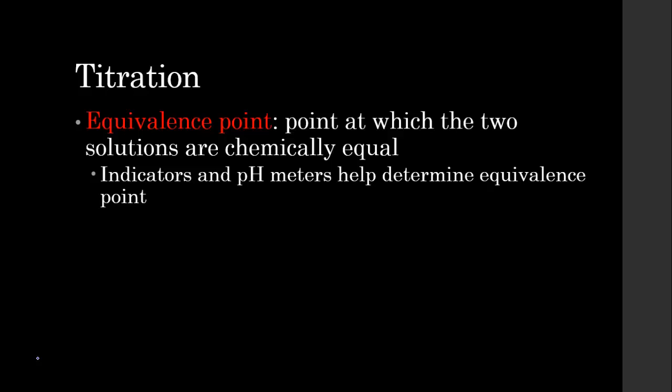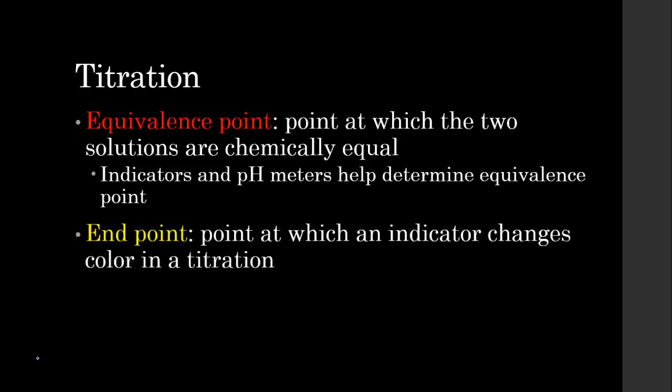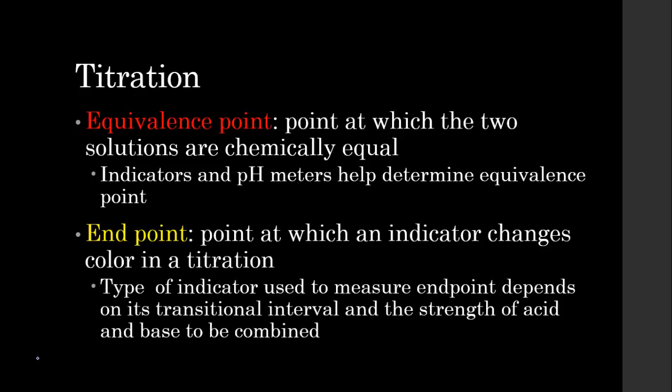But we can use math, or we can use nice indicators and look for a certain color change to happen. The end point is the point that we're going to try to hit, and that is the point at which the indicator changes color in a titration.